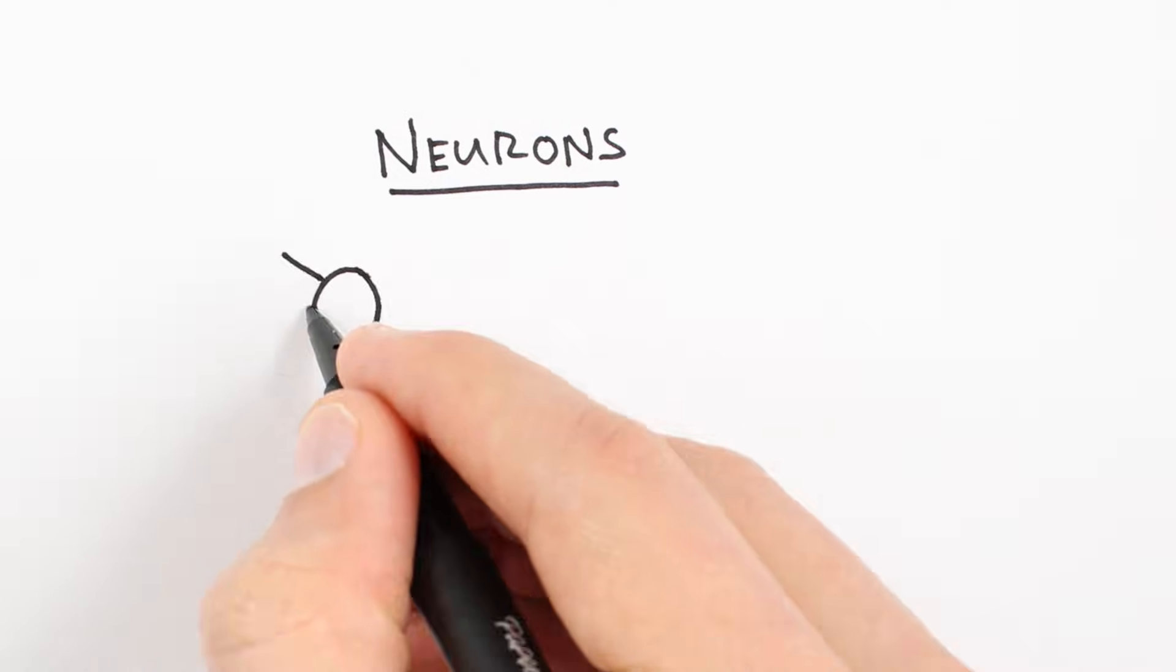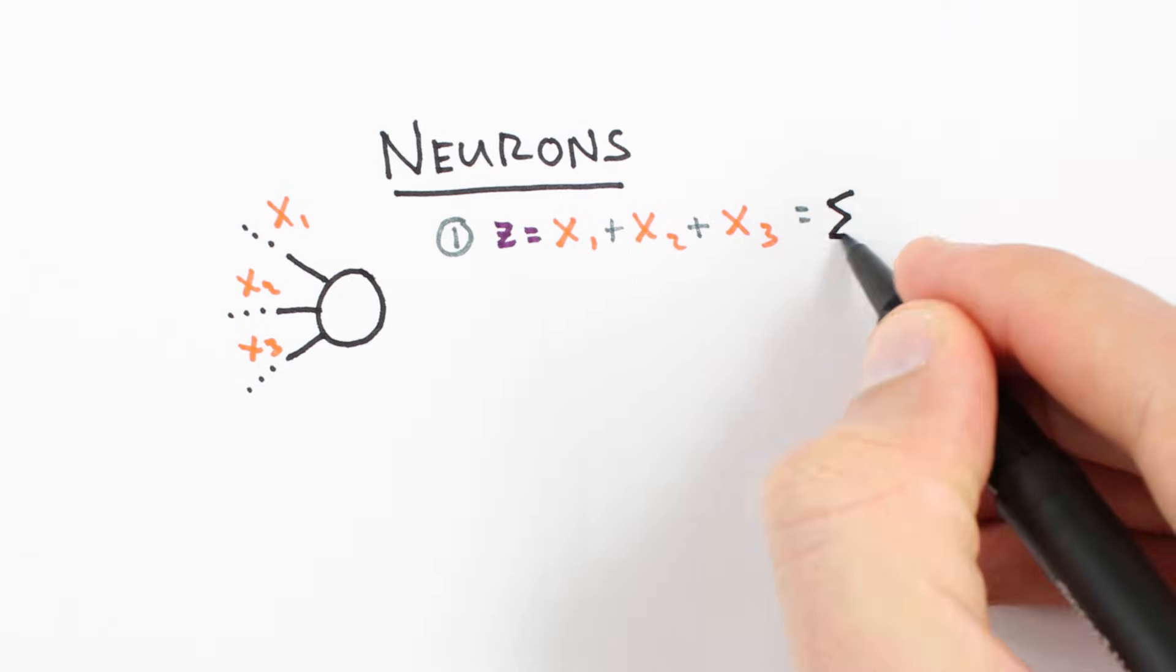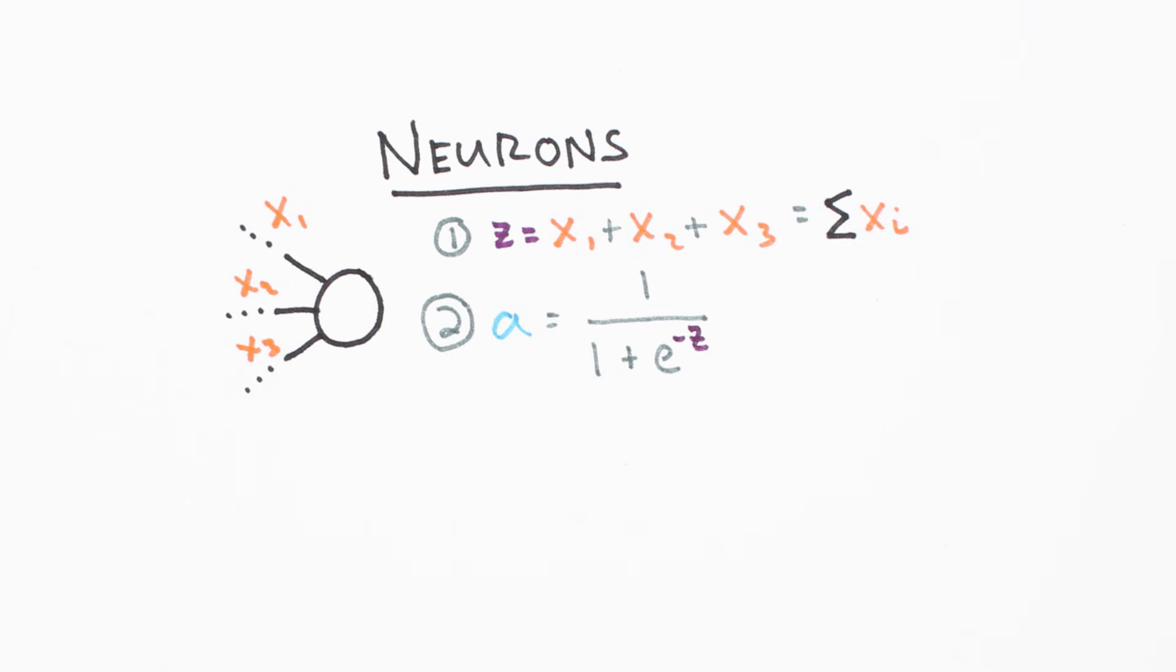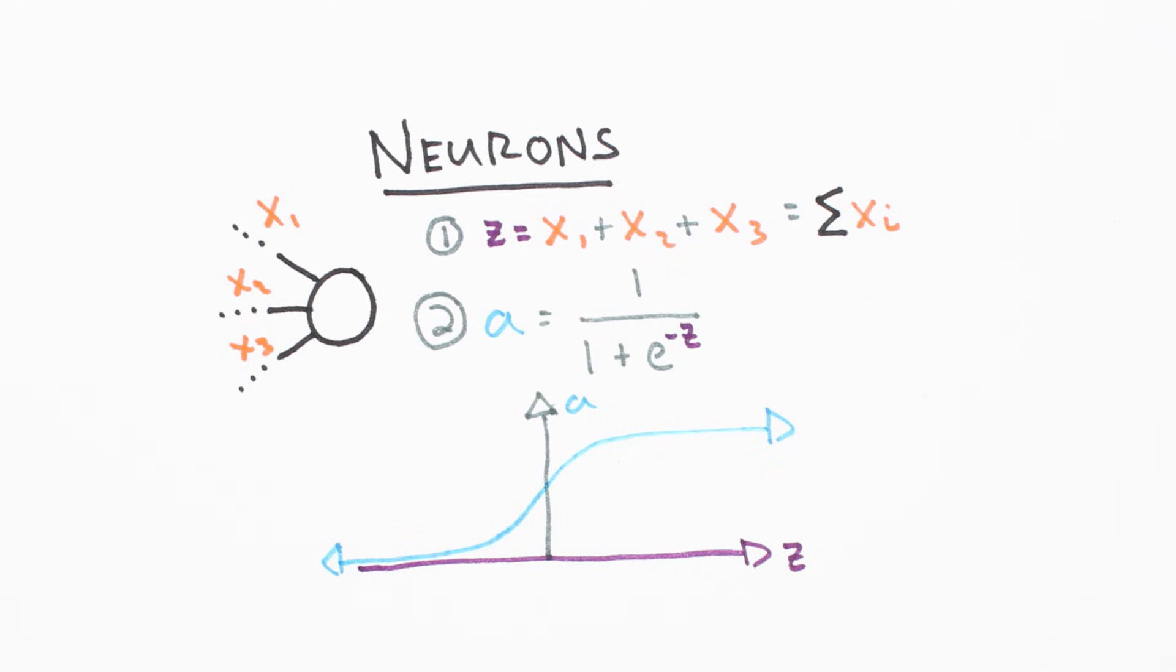Neurons are a little more complicated. Their job is to add together the outputs from all their synapses and apply an activation function. Certain activation functions allow neural nets to model complex, nonlinear patterns that simpler models may miss.